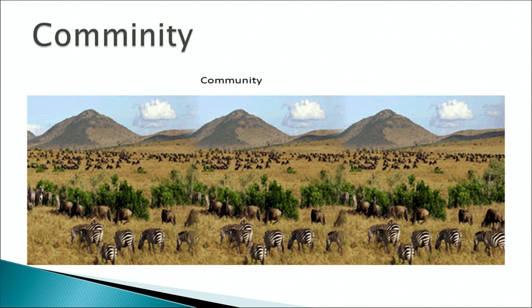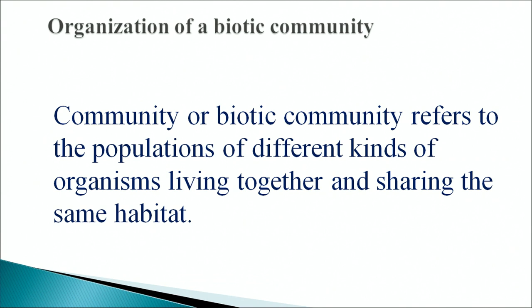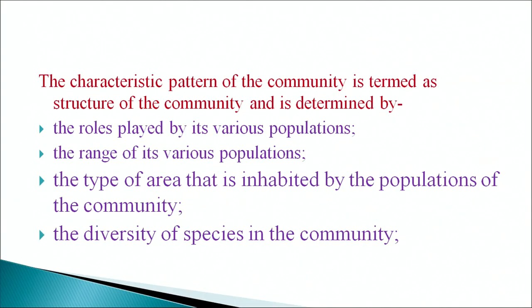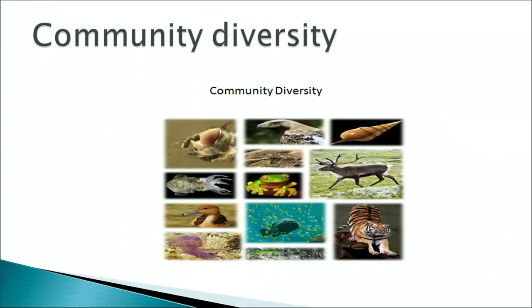Next topic is community. You can see a slide showing a community with different kinds of animals and organisms. A community or biotic community refers to the populations of different kinds of organisms living together and sharing the same habitat. The characteristic pattern of a community is termed its structure and is determined by the role played by its various populations, the range of populations, the type of area inhabited, and the diversity of species in the community.